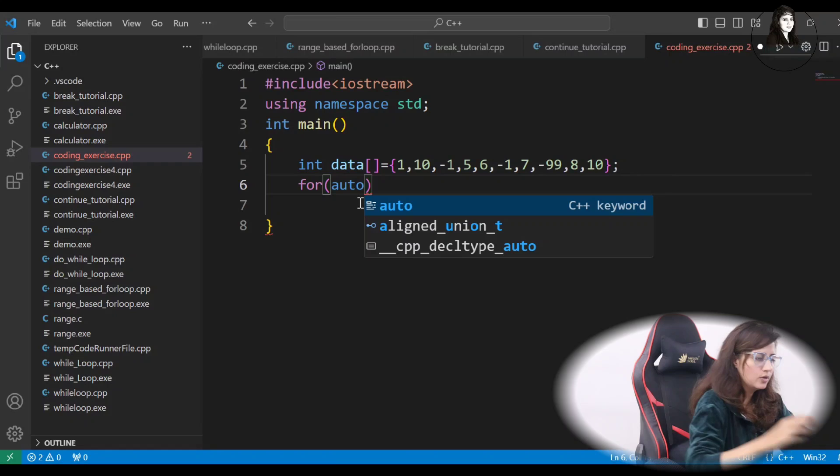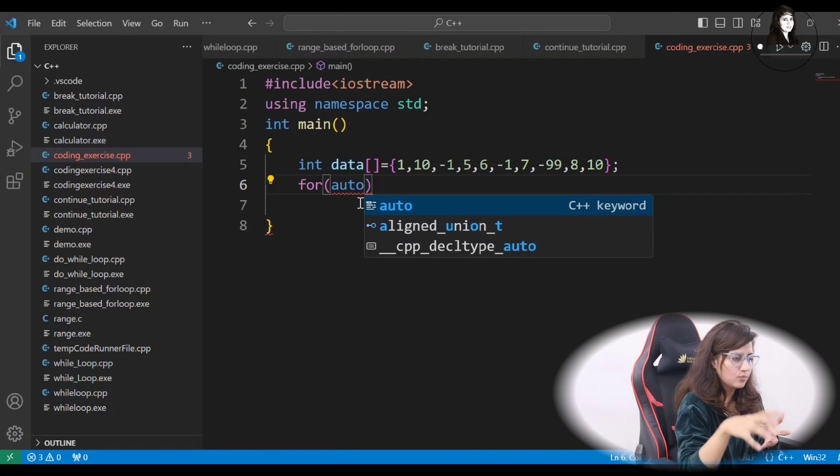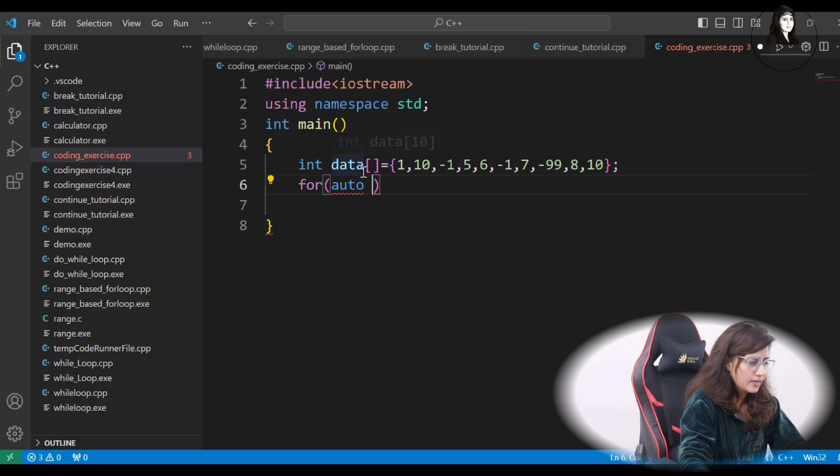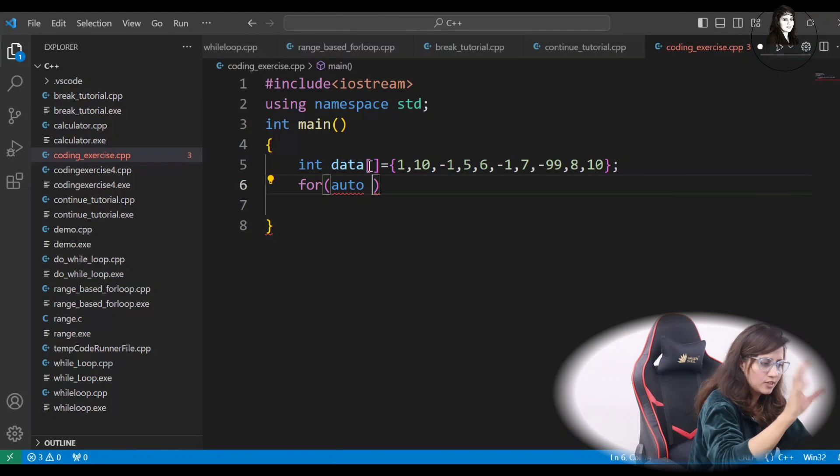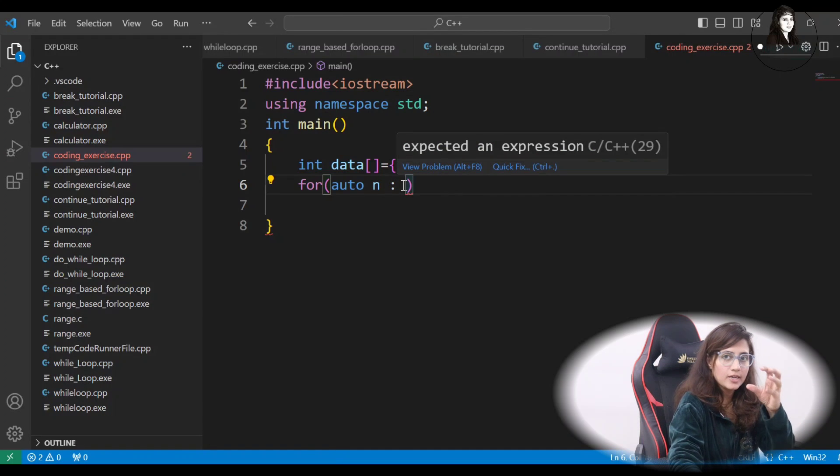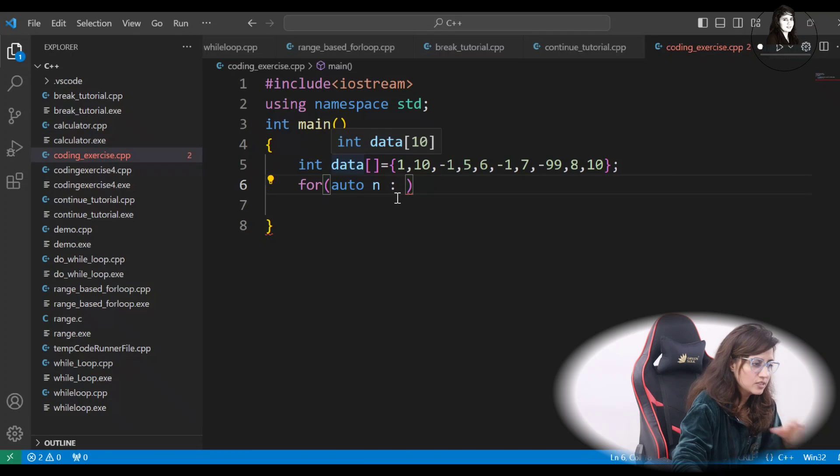So, better to use auto because it will automatically detect the data type of this range and automatically consider the data type. Let's take any variable, any variable, XYZ, ABC, anything. I'm taking N. And then colon. So, the data type of this variable would be automatically int. Because whatever here, that range or that collection, you will write name of that thing. So, name of the array is data.